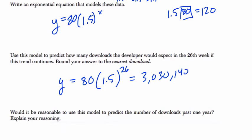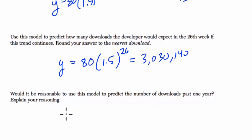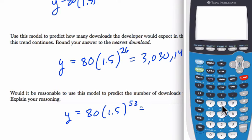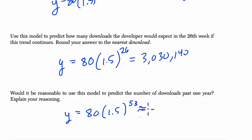What they want to know is, would this be reasonable to use this model to predict the number of downloads past one year? Well, I would say no. If we look at it after one year, we get 80 times 1.5 to the 53rd. There are 52 weeks in a year. You get a really big number here.